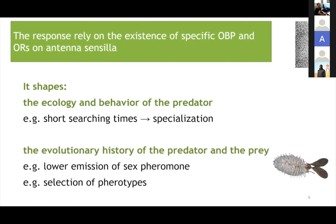If the predator or parasitoid uses the sex pheromone of the prey or host, it will be interfering with the mating of the species. This will have a strong selective pressure on the prey. As a consequence, we can observe a lowering emission of the sex pheromone — speaking softly so as not to be detected by the predator — or alternatively, a selective pressure for individuals producing different compounds, which we call pherotypes.